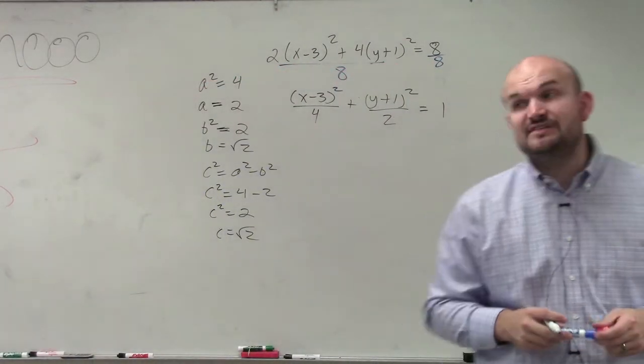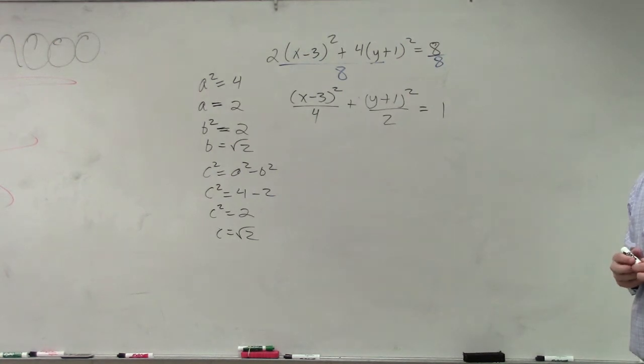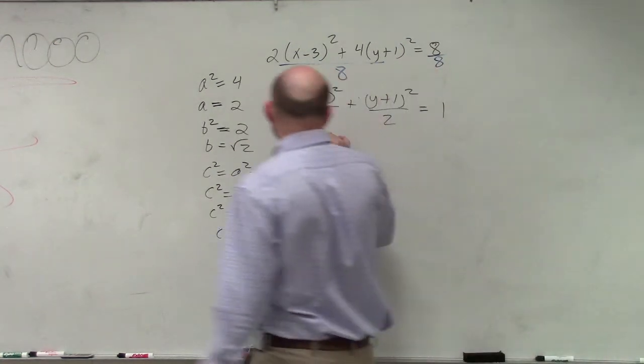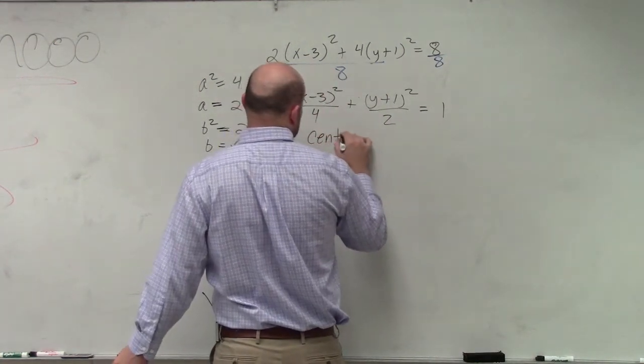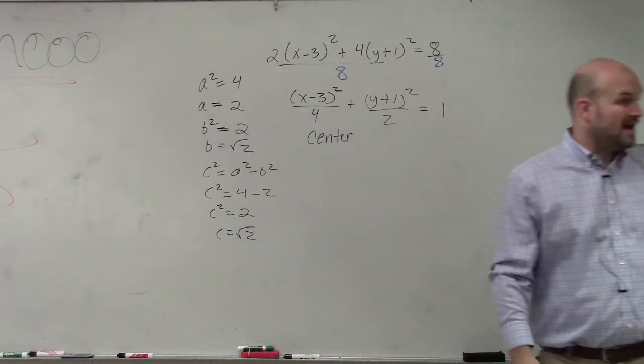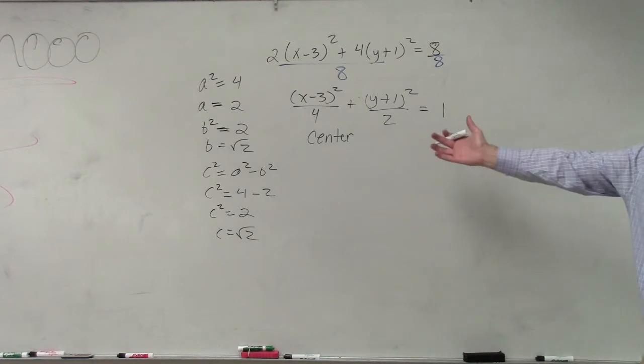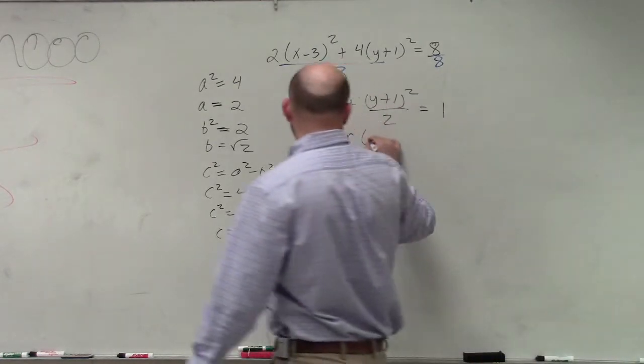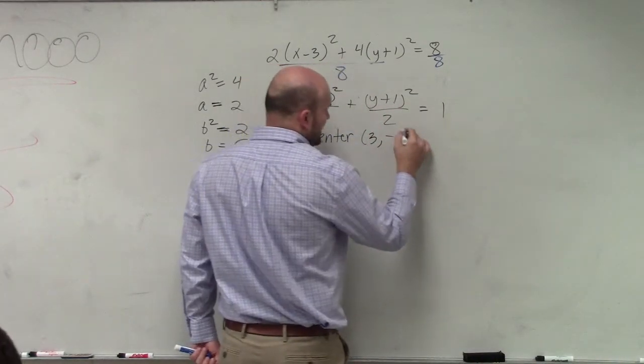Now, the next thing is we need to figure out what the center is. We've got to figure out what the center is. So the center, remember, is our H comma K. So remember, it's X opposite of H, Y opposite of K. So my H in this case is going to be a positive 3, and my Y is a negative 1.